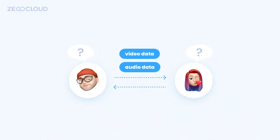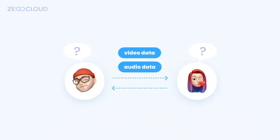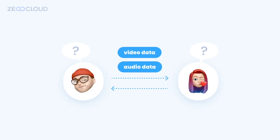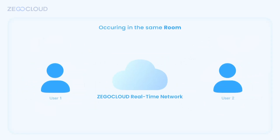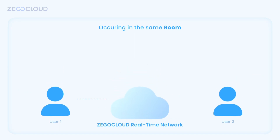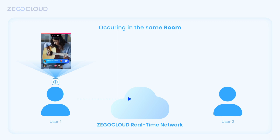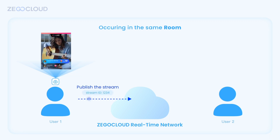To understand how users transmit data to each other, we introduce a basic audio and video transmission concept: stream. Stream refers to the channel that frequently and orderly transmits video and audio data to the cloud. User 1 transfers the locally collected data — which we call publishing the stream — and obtains a globally unique stream ID.